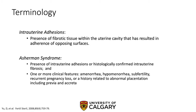Often used interchangeably, intrauterine adhesions refers to the presence of fibrotic tissue within the uterine cavity, resulting in adherence of opposing surfaces. Asherman syndrome includes the presence of intrauterine adhesions in addition to clinical features such as amenorrhea, hypomenorrhea, subfertility, recurrent pregnancy loss, or history of abnormal placentation.